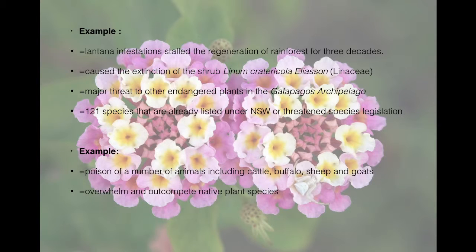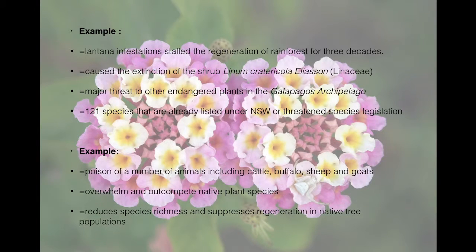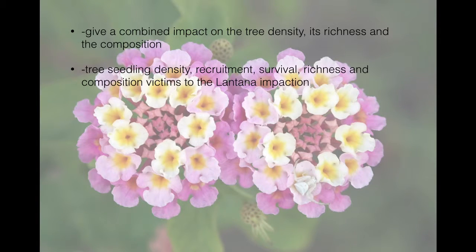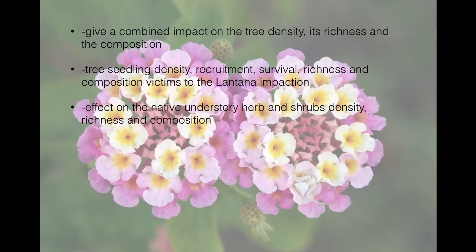Lantana can overwhelm and outcompete native plant species, altering the local environment and reducing biodiversity. It reduces species richness and suppresses regeneration in native tree populations. Studies show that livestock grazing combined with Lantana gives a combined impact on tree density, richness, and composition. Seedling density, recruitment, survival, richness, and composition are also victims of Lantana's impact.